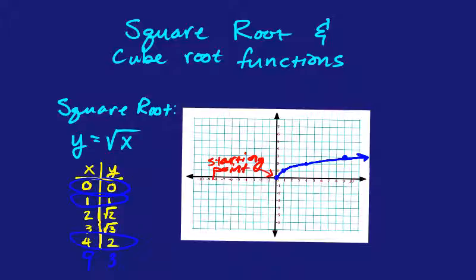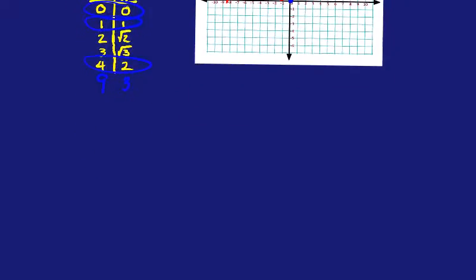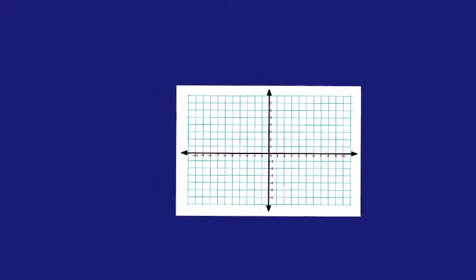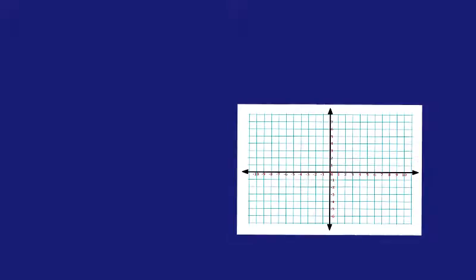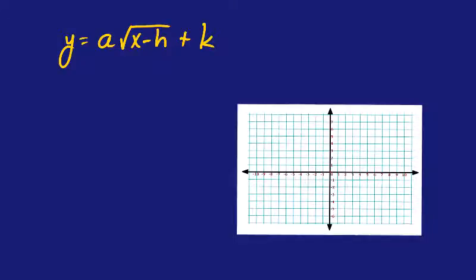Let's take a look at another kind of square root function. We have a graphing form for square root functions that looks like this, and it's going to look very similar for cube root functions. It's y equals a times the square root of x minus h, plus k. If you know what our transformations do, you know how this affects the graph. The starting point is at (h, k).